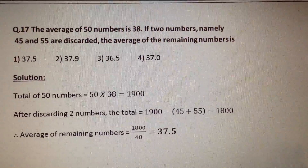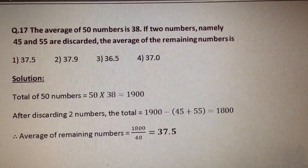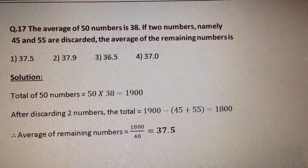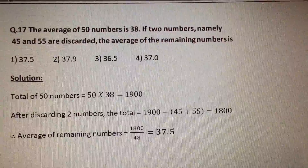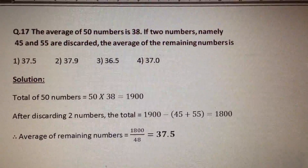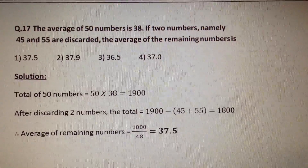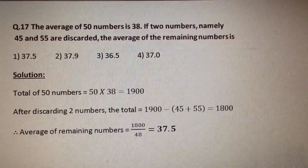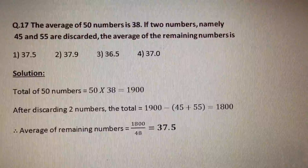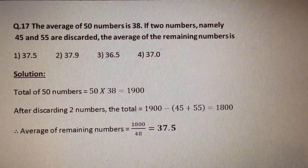The average of 50 numbers is 38. If two numbers, namely 45 and 55, are discarded, the average of the remaining numbers is? This is a very simple question.